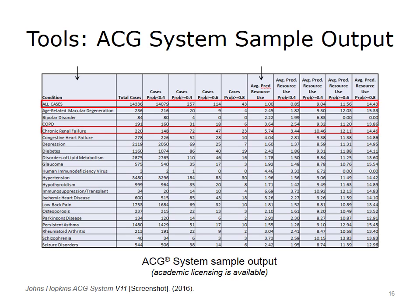This screenshot shows another ACG system report listing major conditions grouped by ADG concepts and the total number of patients in each group. The average predicted resource use shows the likelihood that a group of patients may generate higher or lower utilization rates in the future. The overall average prediction rate for all cases is set at 1. For example, the predicted resource utilization rate for patients with chronic renal failure is 5.74 times higher than the rest of the population.